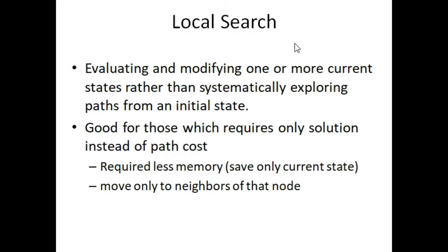The local search method modifies and evaluates only current states. That's why it requires less memory. It also moves only towards the neighboring states — the neighbors of the current node.